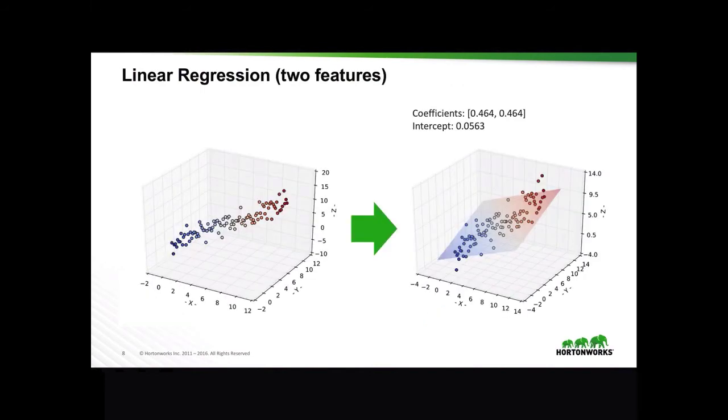If we have two features with our points visualized in this 3D space, after a model training, we would get the following coefficients and intercept, which then could be visualized as a plane in that space.